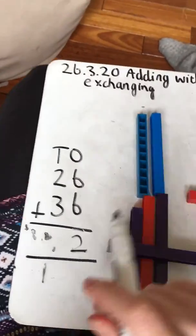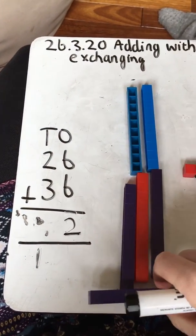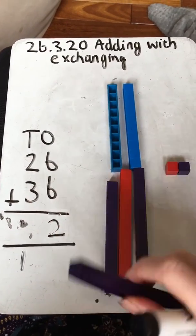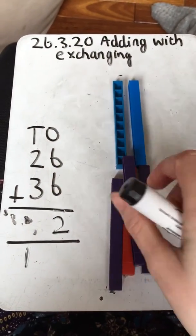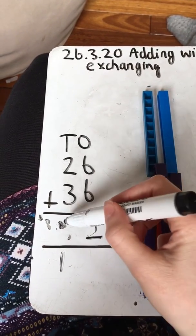My pen I think is not working, but okay, so I've got my 12 and then I need to add my tens. So two plus three is five, and then I add the one that I've exchanged. So my answer is six.